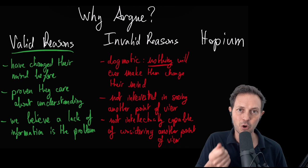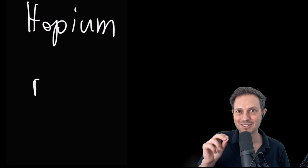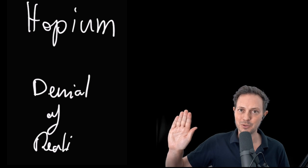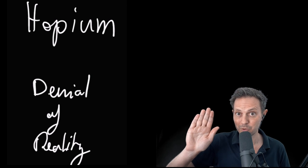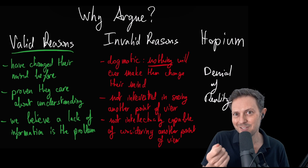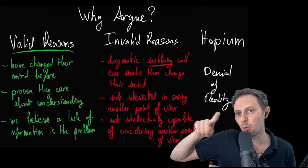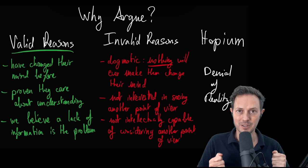Now, the third reason for arguing is the hopium addiction. This is typically when we are in denial of reality. When we observe reality, and we see that they have never changed their point of view, and it doesn't seem that a lack of information is the problem. When we see they're dogmatic, that they're not interested in somebody else's point of view, or they're not intellectually capable of doing it, or we've got no reason to believe that they are intellectually capable of doing it, when despite all of this, we still hope that they can change their point of view, that is hopium addiction.